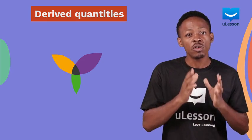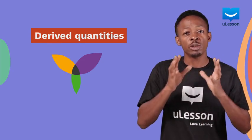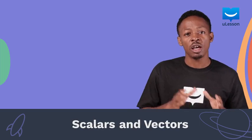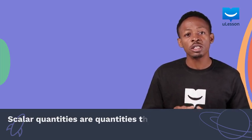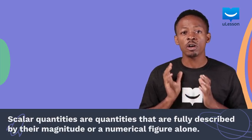These quantities can also be classified into two groups depending on their relationship with magnitude and direction. These two groups are scalars and vectors. Scalar quantities are quantities that are fully described by their magnitude or a numerical figure alone.